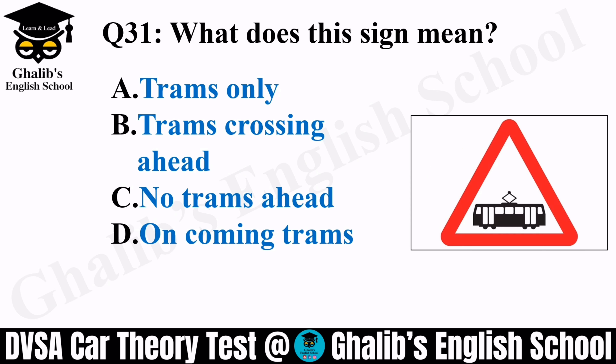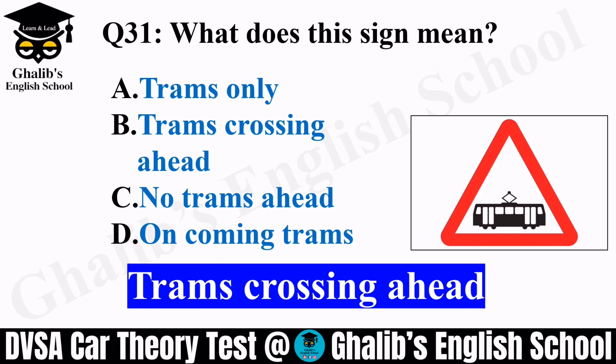Question 31. What does this sign mean? Options: trams only, trams crossing ahead, no trams ahead, or oncoming trams. This sign means trams crossing ahead. It is a red triangle — triangle shapes are warning signs — telling you to slow down carefully because there is a tram crossing ahead.